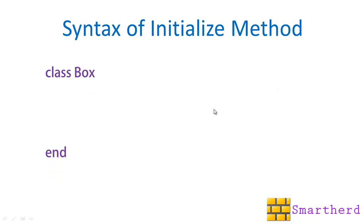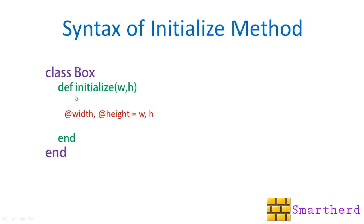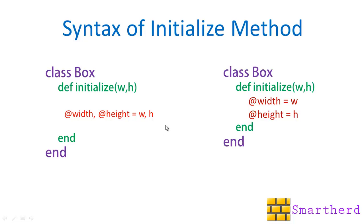Now let us find out what the syntax of writing an initialize method inside the class looks like. Suppose we are having a class box, with the end keyword ending the class. Then we have a method def initialize with parameters w and h — this is width, this is height of the box. Inside it we have two instance variables: @width and @height equal to w and h. This w is assigned to the instance variable @width, and h is assigned to @height. We can also write it differently as @width = w and @height = h on separate lines.